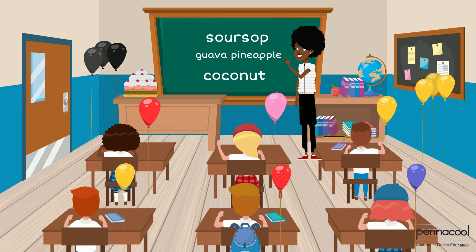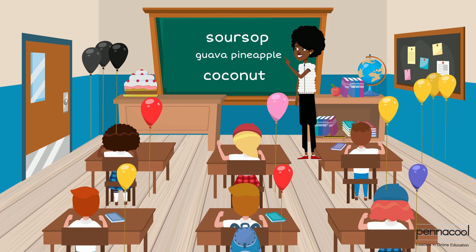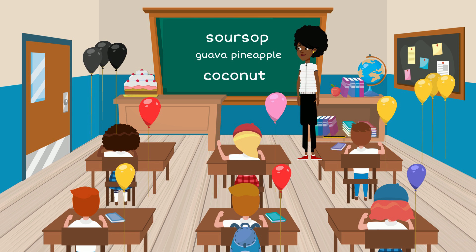For each flavor of ice cream, Miss Roberts asked for a show of hands so she can see who likes each flavor. When she asks who likes soursop, only five students raised their hand, so she writes the number five next to soursop. When she asks who likes Guava Pineapple, ten students raised their hands, so she writes ten next to Guava Pineapple. Lastly, when she asks who likes coconut, twenty students raised their hands, so she writes twenty next to coconut.